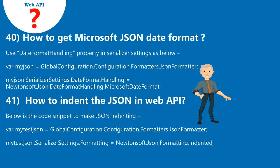Question 40: How to get Microsoft JSON date format? Use the DateFormatHandling property in serializer settings as below: var mitchson = GlobalConfiguration.Configuration.Formatters.JsonFormatter; mitchson.SerializerSettings.DateFormatHandling = Newtonsoft.Json.DateFormatHandling.MicrosoftDateFormat.